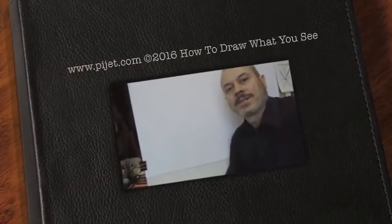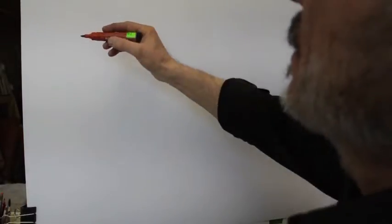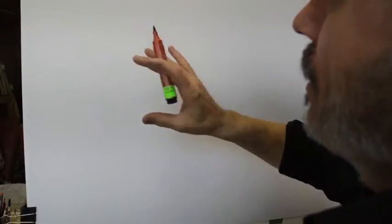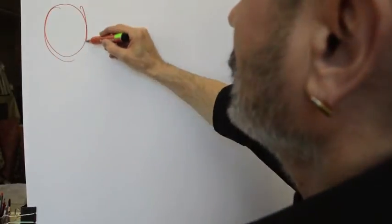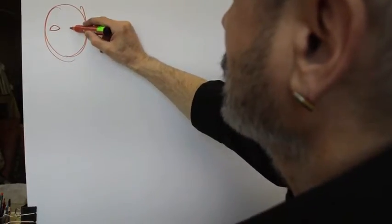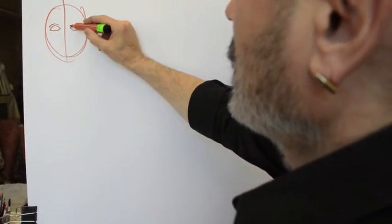Welcome to the next session of 'How to Draw What You See' — this is the second part about how to draw the eyes. To conclude our talk, one very important thing is that you practice. Once you've practiced the eyes from the front, the form and shapes, you should then go and start practicing different angles of the eye.